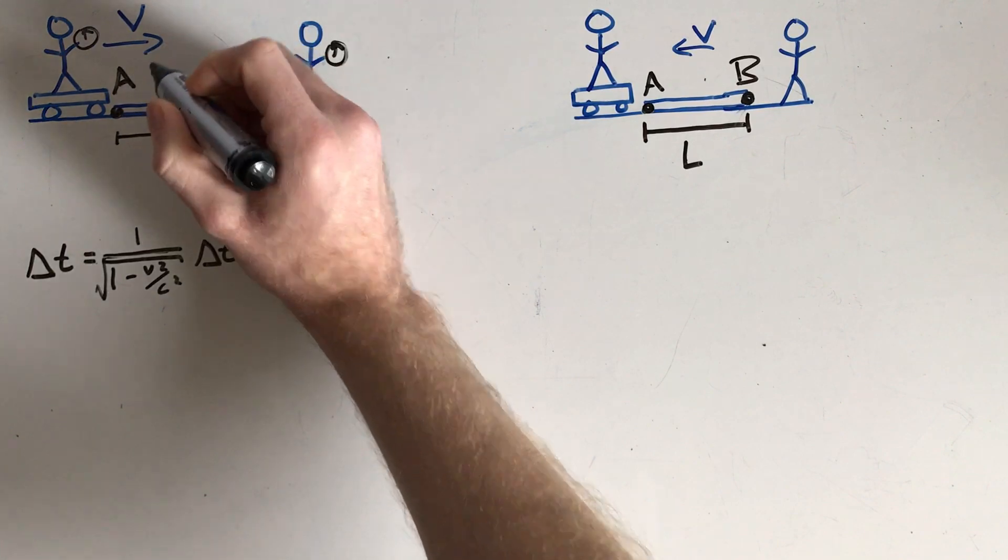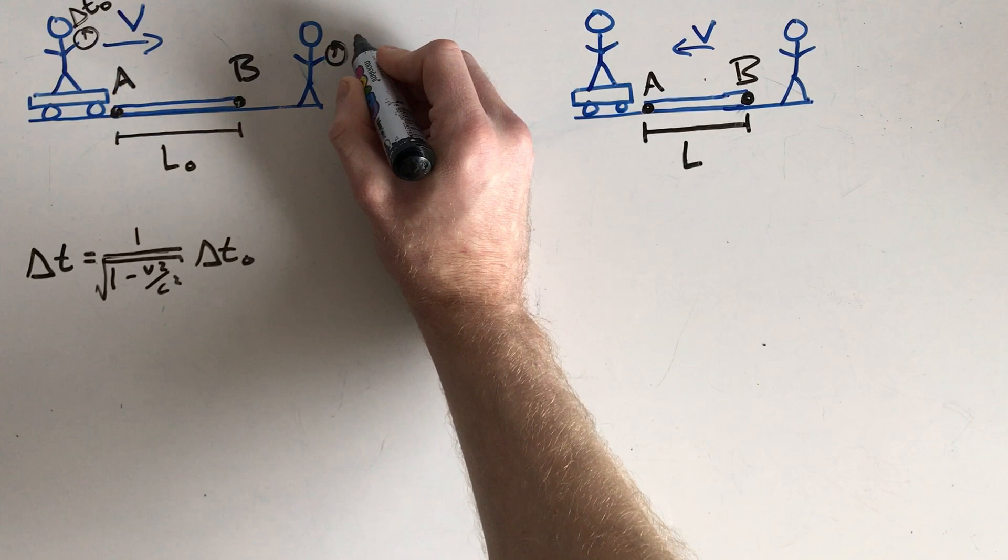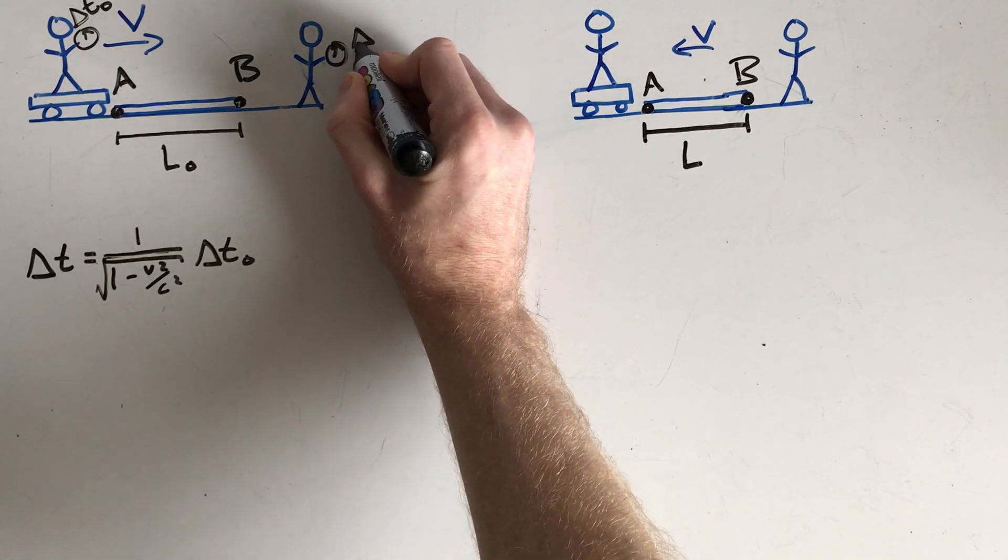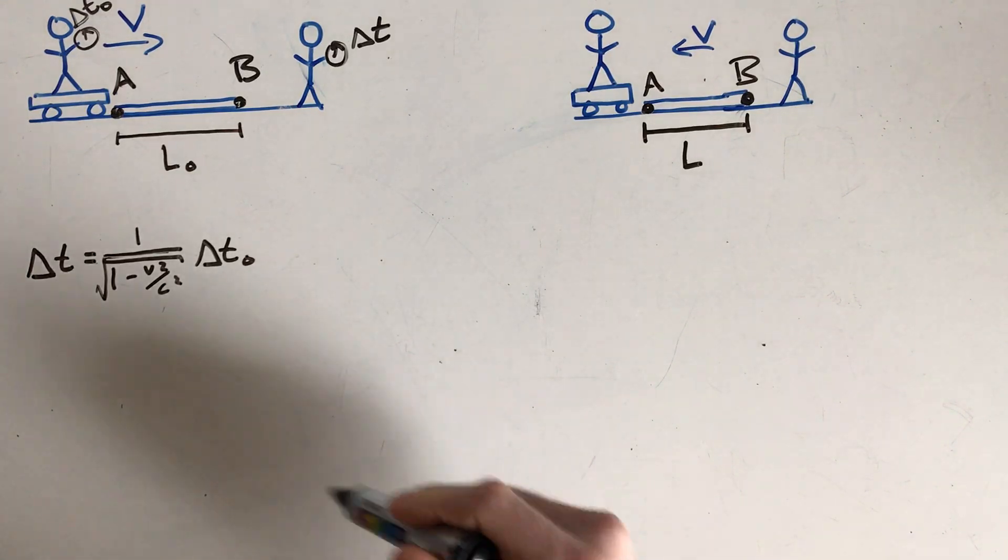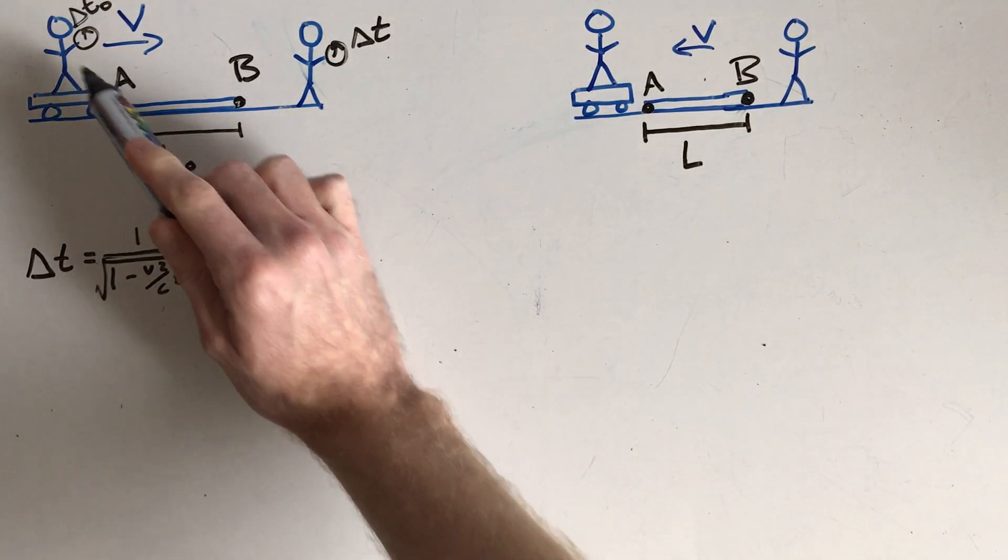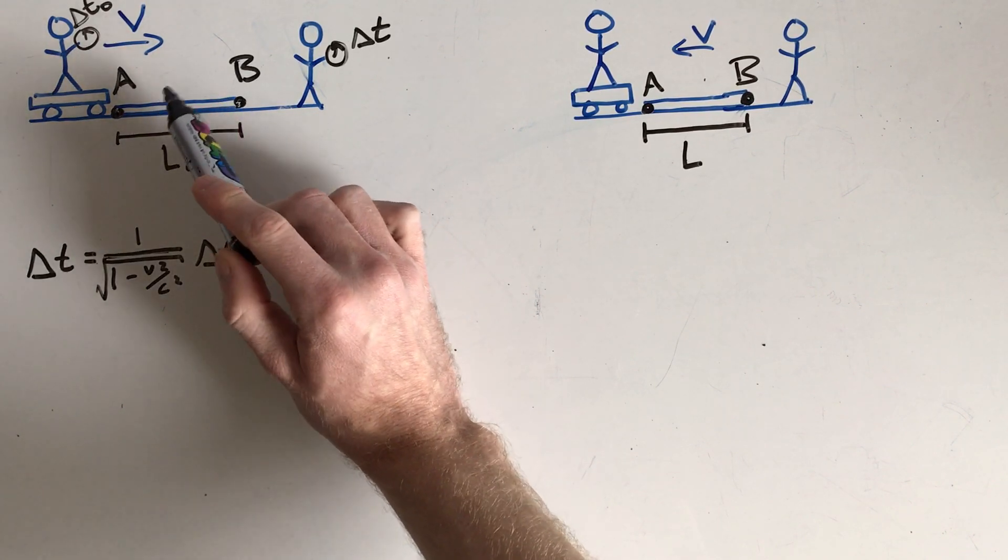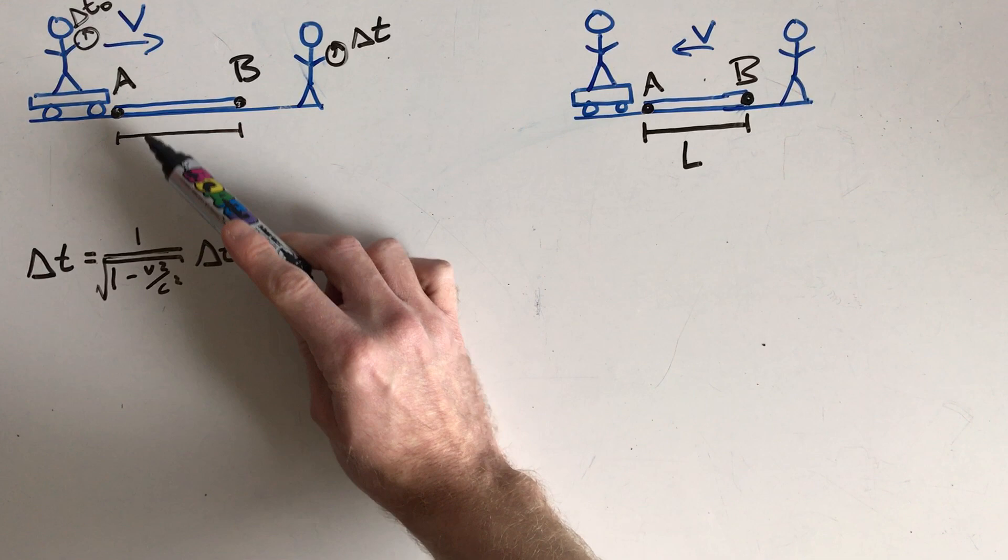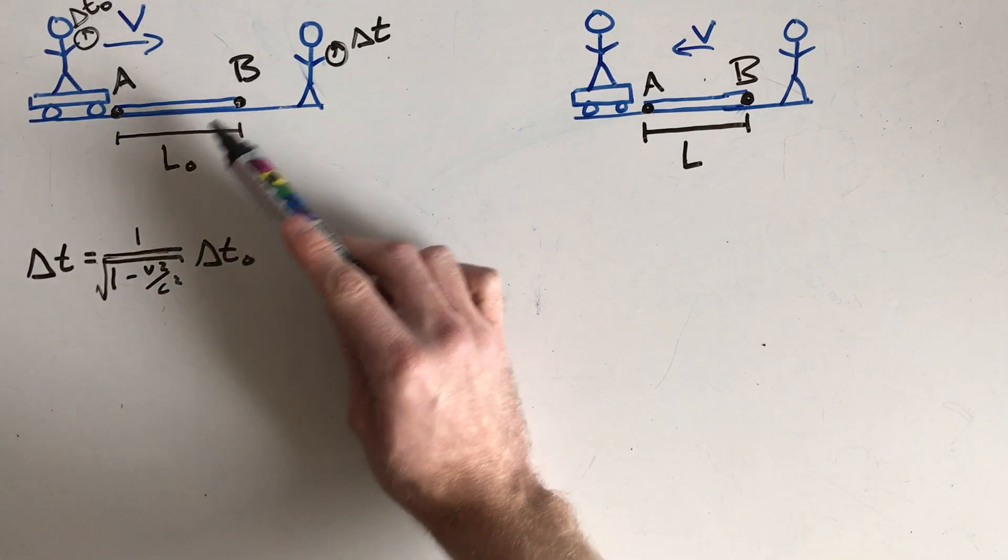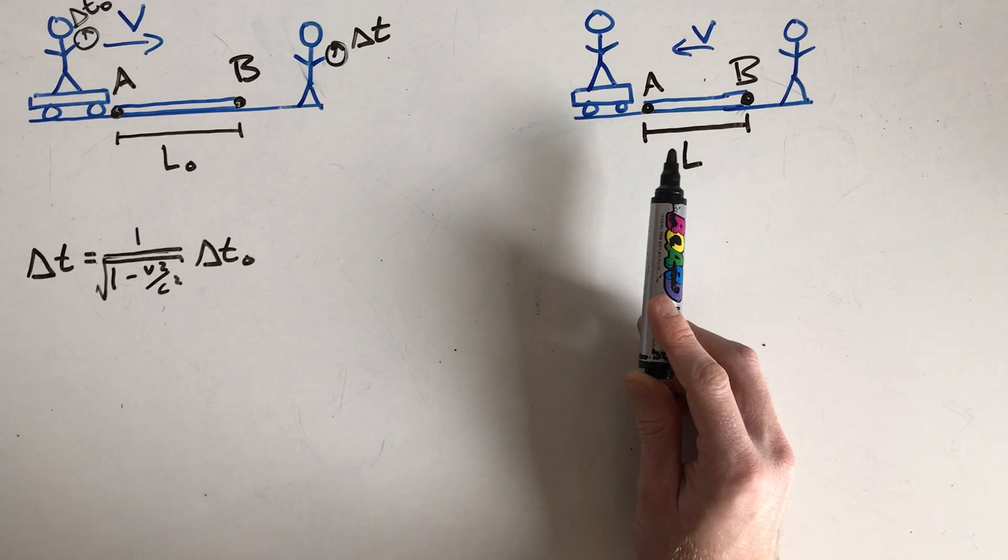So I'm going to call the time that this person measures delta T naught and the time this person measures delta T. And it also makes sense here that if they disagree on how long it takes to get from point A to point B, then they will also disagree on how far apart those two points are and thus how long the ruler is. So here's what I mean.